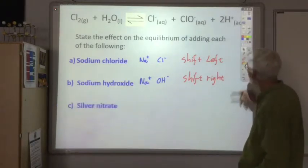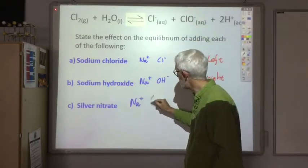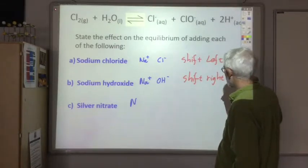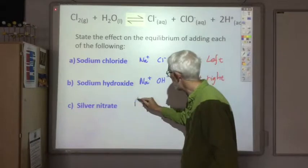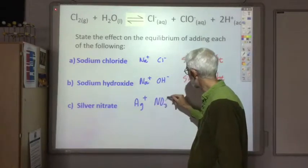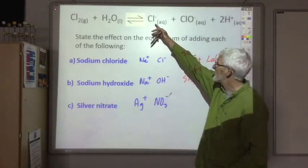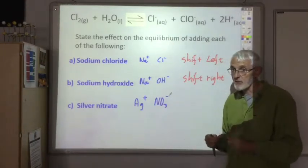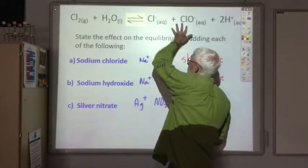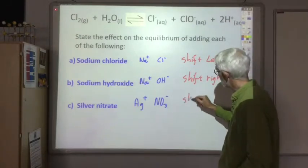What happened when we added silver nitrate? We're adding silver ions and nitrate ions. Well, the silver ions would react with the chloride ions to produce silver chloride. Removing chloride ions, so the equilibrium shifts to the right to replace them. So once again, it would shift to the right.